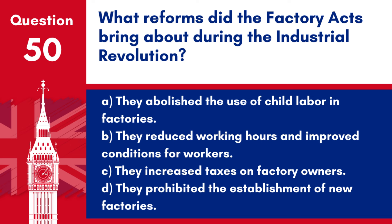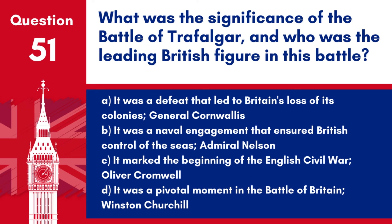Question 50. What reforms did the Factory Acts bring about during the Industrial Revolution? a. They abolished the use of child labour in factories. b. They reduced working hours and improved conditions for workers. c. They increased taxes on factory owners. d. They prohibited the establishment of new factories. Answer: b. The Factory Acts were a series of laws passed during the Industrial Revolution to reduce working hours, improve conditions for workers, and later to regulate the employment of children and women in factories.